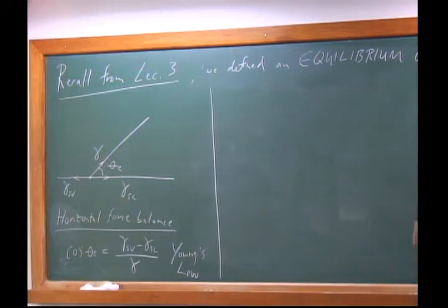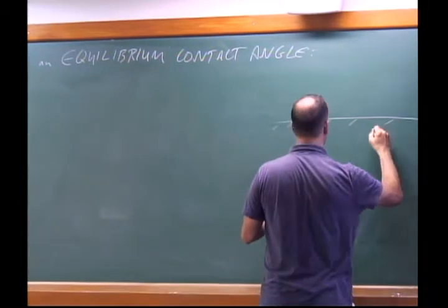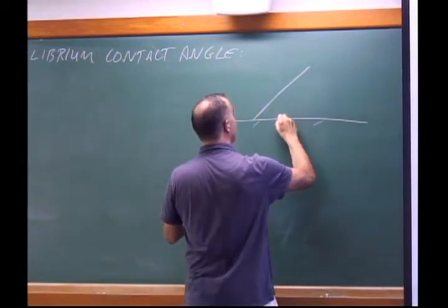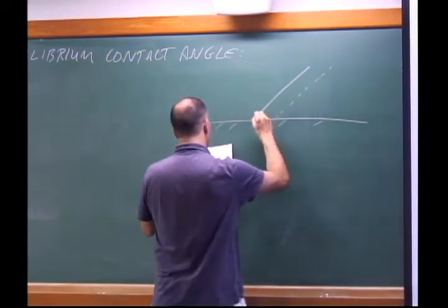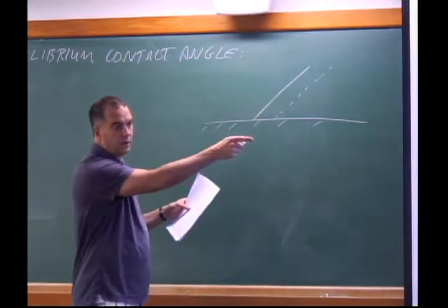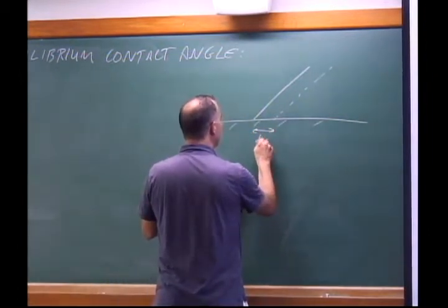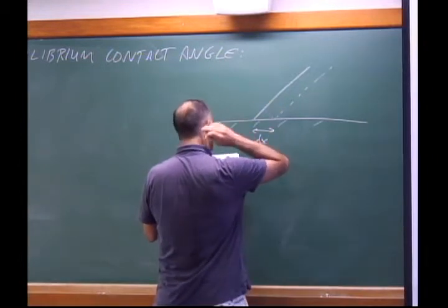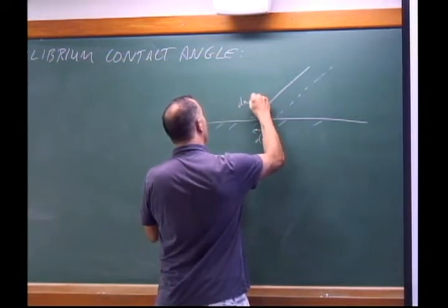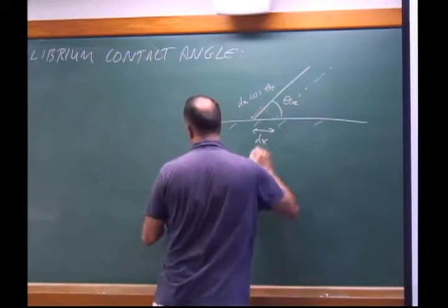We can also think of this in terms of energetics, which will be useful when we start looking at rough solids. Imagine this interface moving — in doing so, it changes the surface energy of the lower substrate by an amount proportional to the distance moved, and there is also associated creation of surface. Setting this energy change to zero in equilibrium gives us Young's law again.